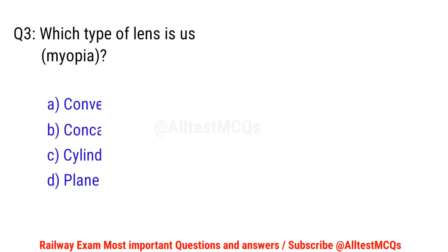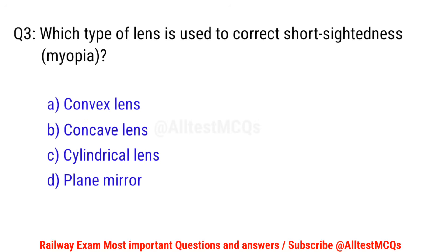Q3. Which type of lens is used to correct short-sightedness (myopia)? D. Concave lens.